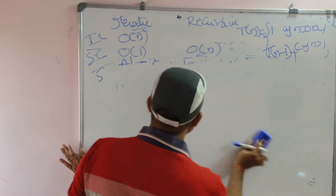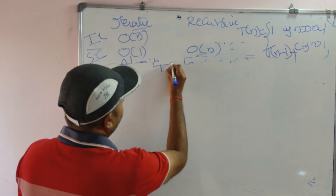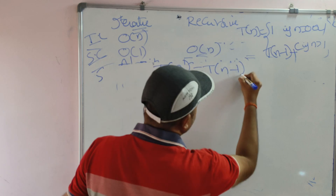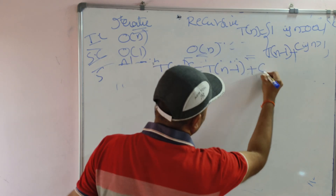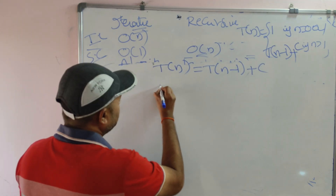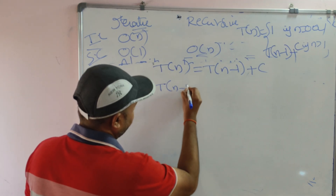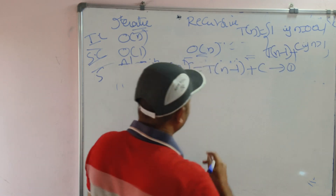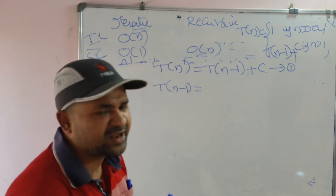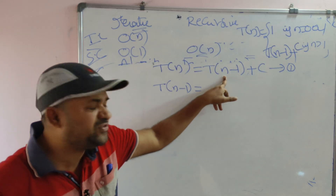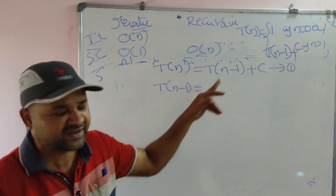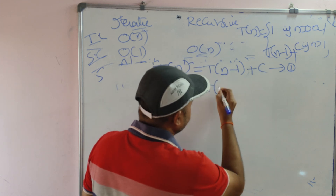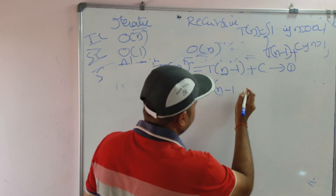This is the recurrence relation (Equation 1): T(n) = T(n - 1) + c. To solve it, substitute n - 1 for n to get T(n - 1) = T(n - 2) + c (Equation 2).